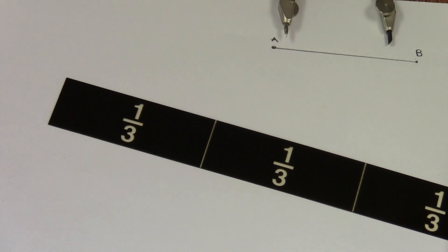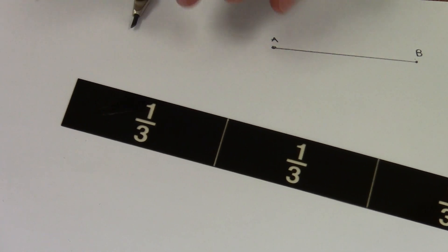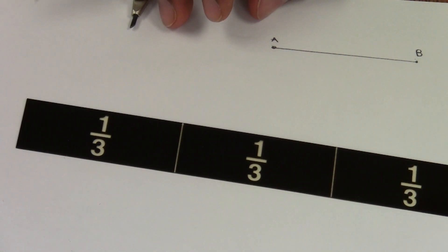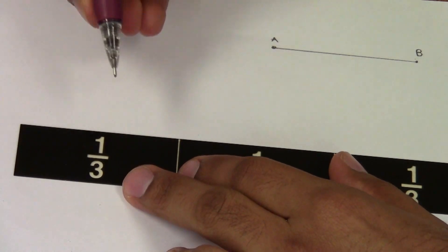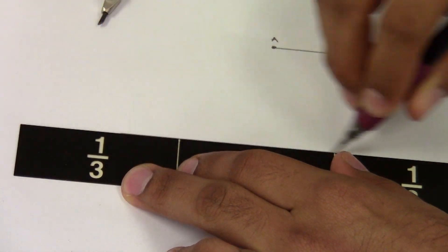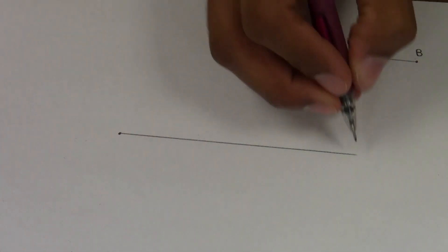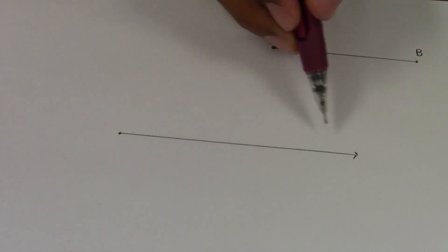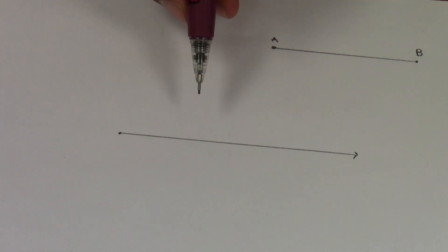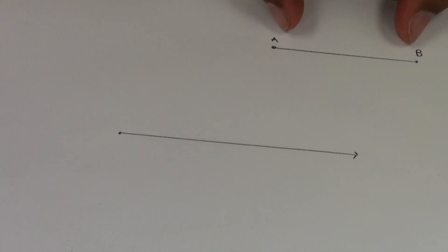The first step to duplicating a line segment is to create a ray. Think about what a ray means - it has an endpoint and keeps going forever. You can make this as long as you need to. The ray that you create should be longer than the line segment you're going to duplicate.